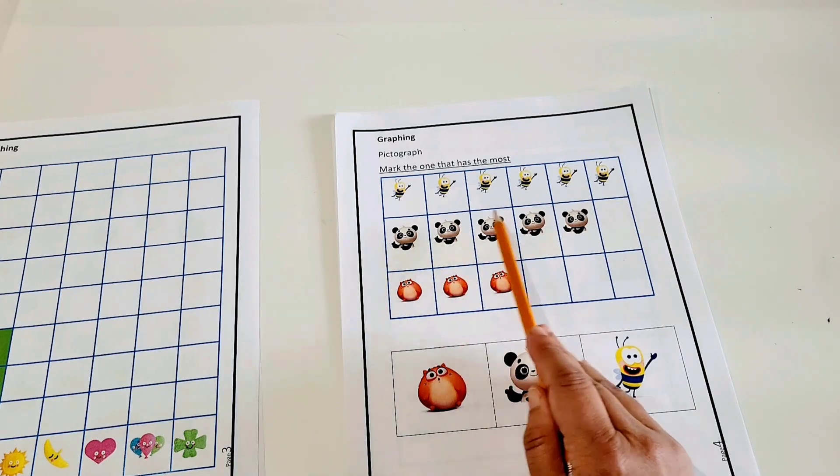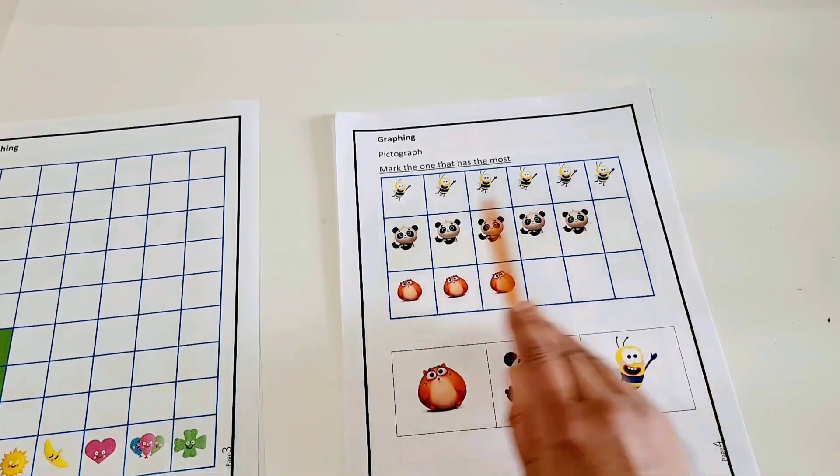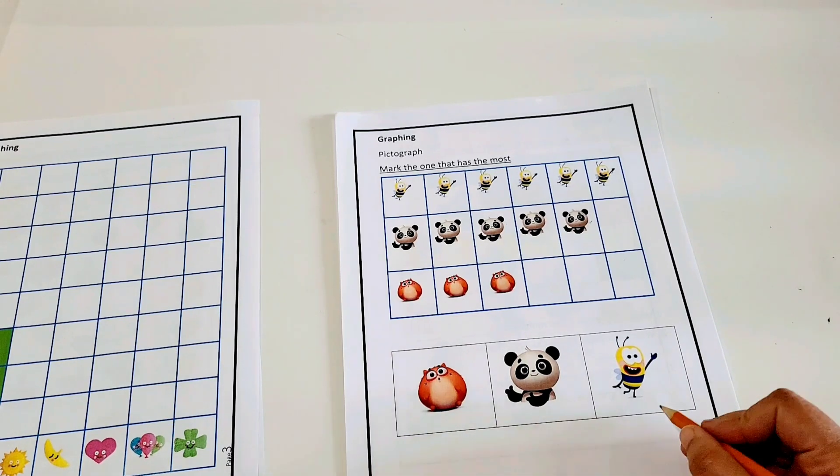This is 3. This is 1, 2, 3, 4, 5. This is 1, 2, 3, 4, 5, 6. I think this is the one, and then you mark this one.